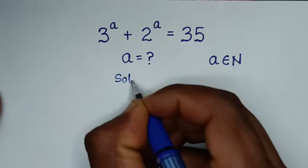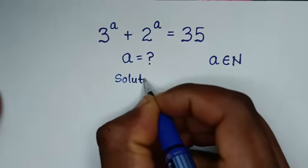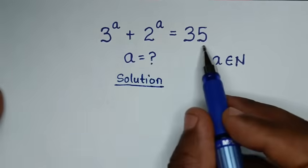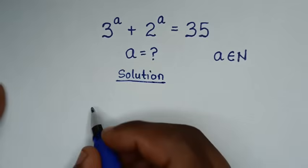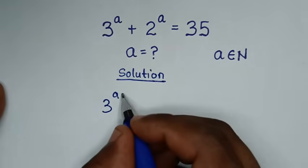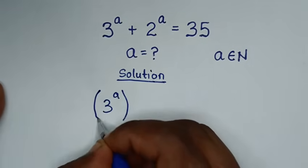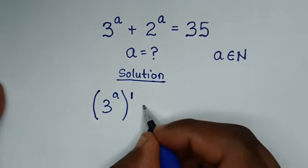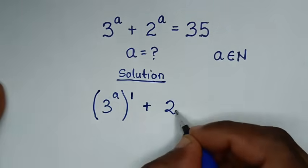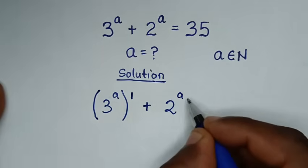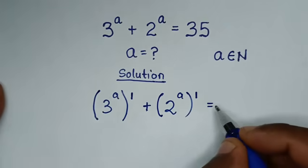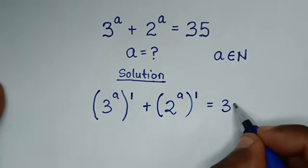Now, solution. From this problem, it is 3 power of a — we make a bracket with power of 1 outside the bracket — plus 2 power of a, it will be 2 power of a, then bracket power of 1 outside the bracket, is equal to 35.